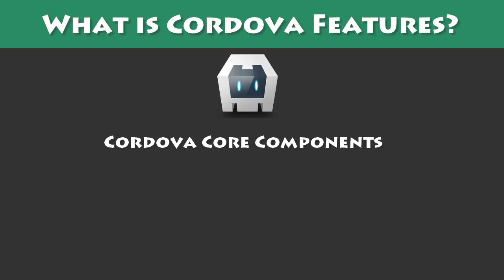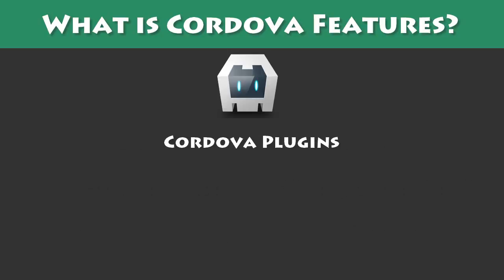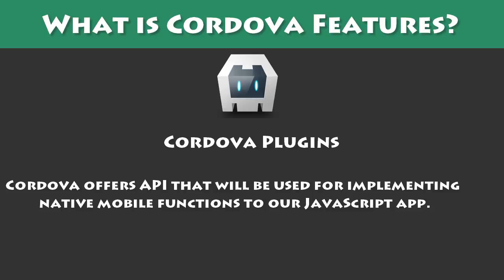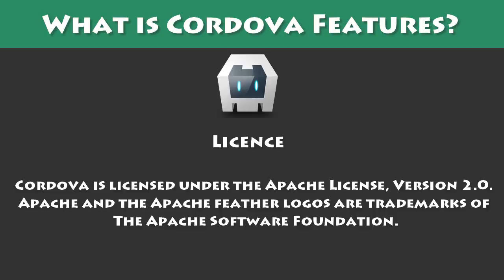Second, Cordova Core Components. Cordova offers a set of core components that every mobile application needs. These components will be used for creating the base of the app so we can spend more time implementing our own logic. Third, Cordova Plugins. Cordova offers an API that will be used for implementing native mobile functions to our JavaScript app. Fourth, License. Cordova is licensed under the Apache License, version 2.0.